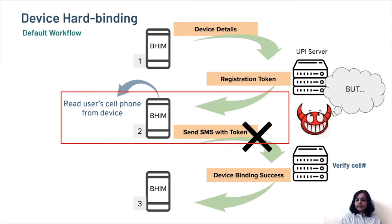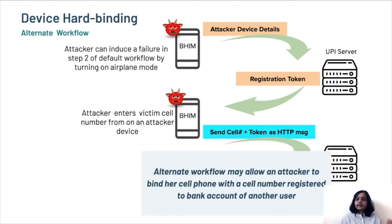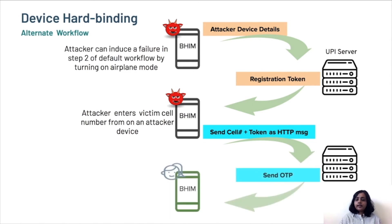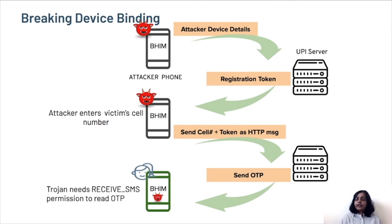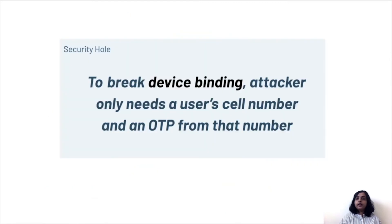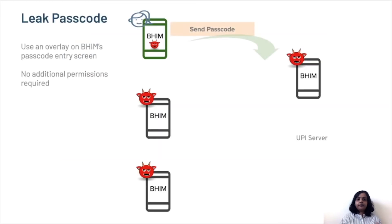In the event that step 2 of the protocol fails, UPI's alternate workflow allows an attacker to key in a victim's cell number on an attacker's device. This allows an attacker to potentially bind an attacker's device with a victim's cell number. An attacker can induce a failure in step 2 of the default workflow by simply turning on airplane mode. Once the attacker keys in the cell number, the cell number and the token is sent as an HTTP message to the UPI server. The UPI server then sends an OTP to the victim. The victim thus receives a rogue OTP. This OTP can be intercepted by the Trojan running on the attacker's device — the Trojan only requires the receive SMS permission to do this. Thus, to break device binding, all an attacker needs is a user's cell number and one OTP from that number.